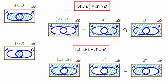So the intersection of A and B complemented is identical to the complement of A union the complement of B. De Morgan's laws then.